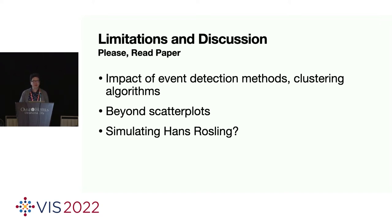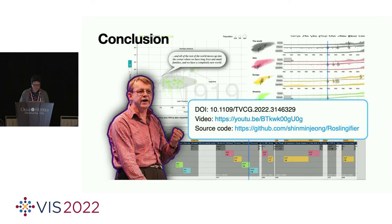So we have initial event detection and cluster algorithms. But the final story may be different based on algorithms. And we use the scatterplot for demonstration purposes. But there could be different types of visualization techniques which can be used for data presentations as well. The last idea is interesting that maybe we can simulate Hans Rosling because Hans Rosling's presentation is so effective. But it is not the main scope of this work. But once we give the data and make the presentation as if Hans Rosling is presenting, this is an interesting idea.